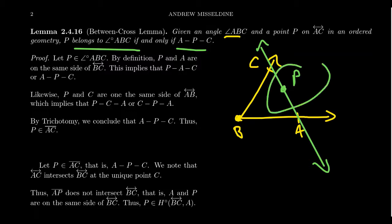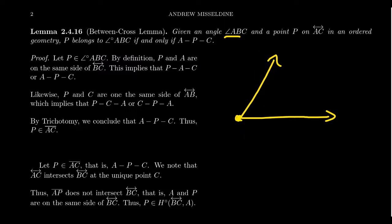The diagram seems to suggest that, but one thing we have to be very careful about in order geometry is that we don't make assumptions based upon the diagram, because it's really hard to draw diagrams that don't satisfy the betweenness relationships we're trying to prove. The diagrams we draw are typically Euclidean, and Euclidean geometry is an order geometry. Think of like the real projective plane — notions of betweenness fall apart. So don't rely too much on the picture.